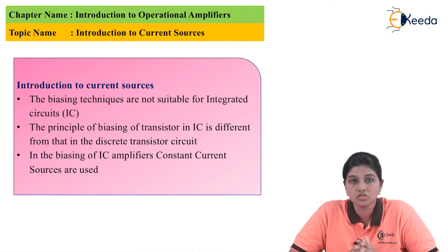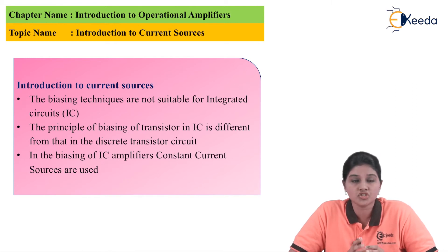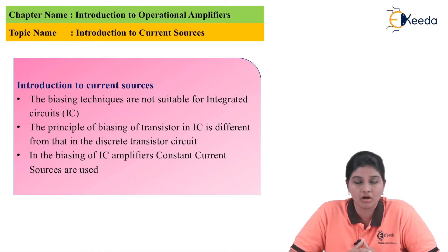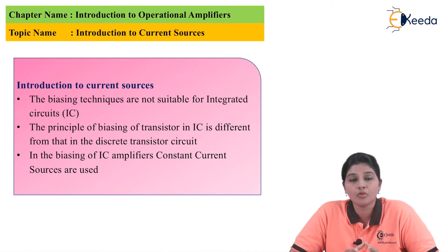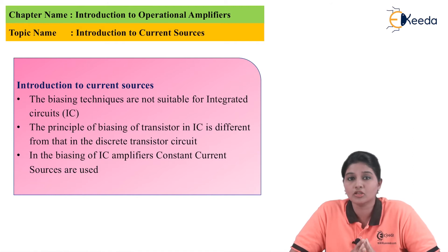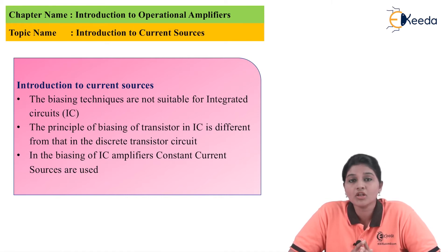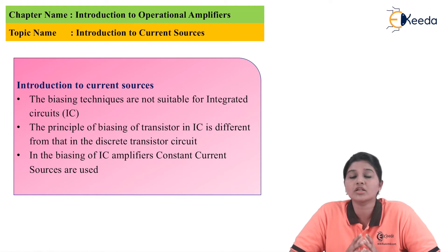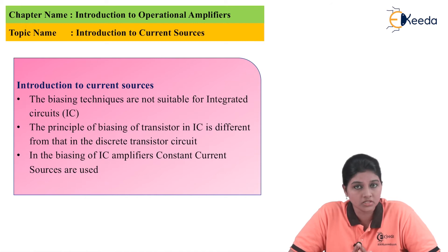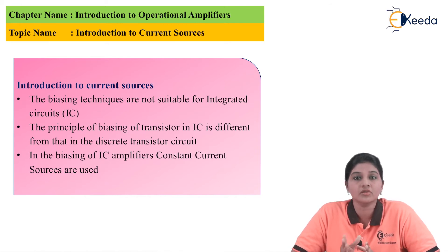The biasing circuit uses a large number of resistors and capacitors. In the case of resistors, the fabrication of a resistor on a chip requires large surface area as compared to a transistor. Therefore, it is difficult to provide such large surface area on the chip. The second reason is the values of capacitors — the bypass and coupling capacitors used in the biasing circuit are in the range of microfarads. Therefore, large values of capacitors are required and fabrication of these values of capacitor on the chip also requires a large area and it is very much difficult to fabricate on the chip. Therefore, the integrated circuit uses a different method of biasing than the discrete circuit.